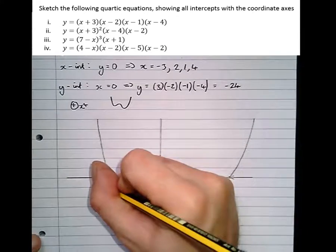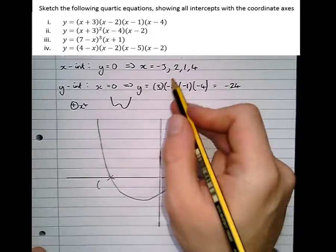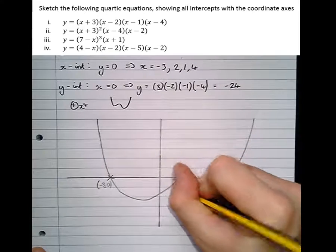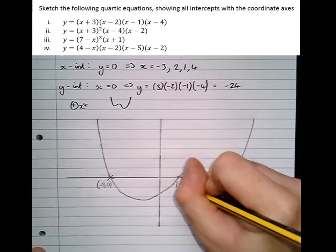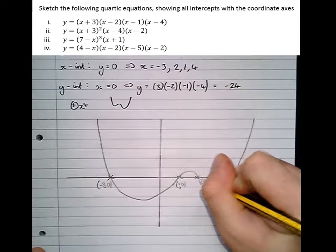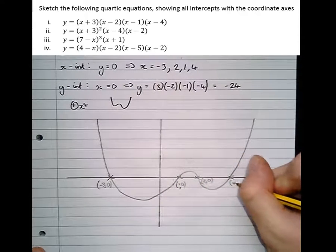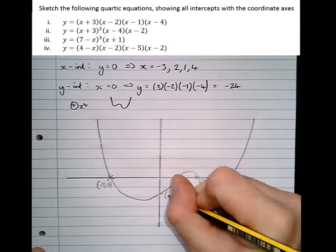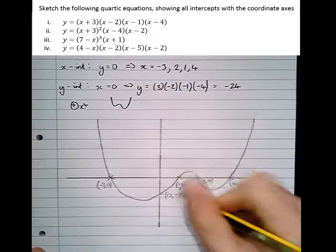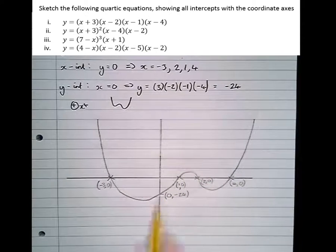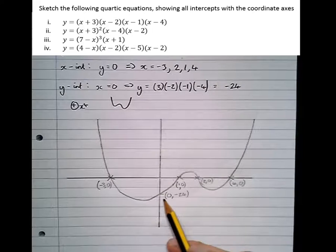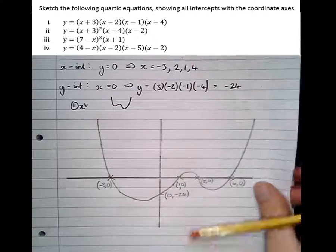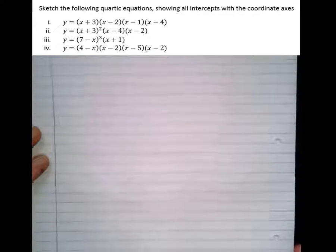So the intercepts are at minus 3, 0; there's one at 1, 0; there's another one at 2, 0; and another one at 4, 0. And the y-intercept is at 0, minus 24. Notice the scale isn't very good, but that doesn't matter, as long as everything is roughly in the right position. Right, so that's that first one. Part 1, we've drawn that. Let's have a go at the next one.